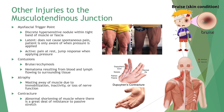Atrophy is the wasting away of muscle due to immobilization, inactivity, or loss of nerve functioning. A contracture is an abnormal shortening of muscle with great resistance to passive stretching, generally the result of a muscle injury that impacts the joint and leads to accumulation of scar tissue.